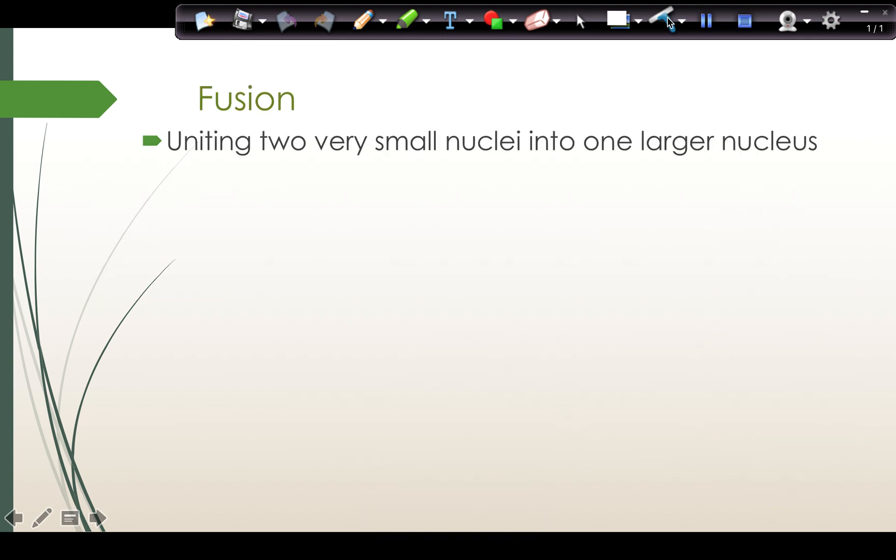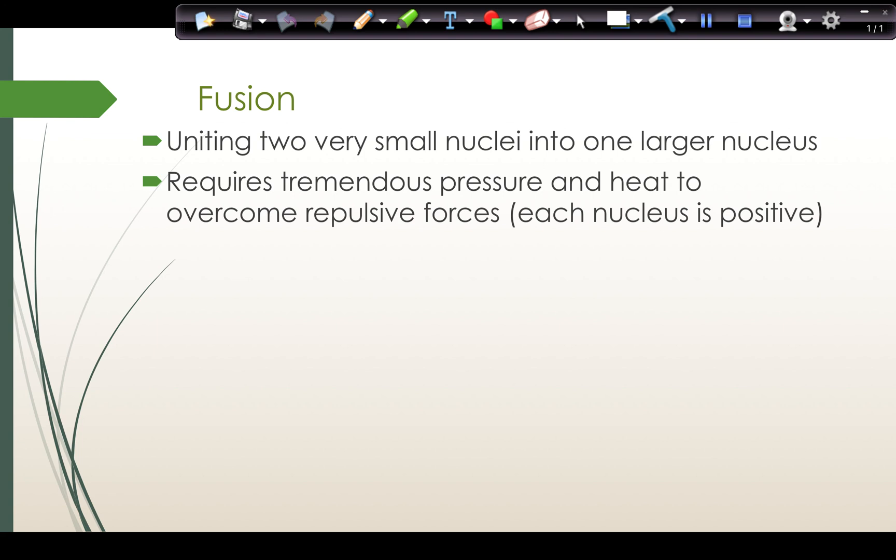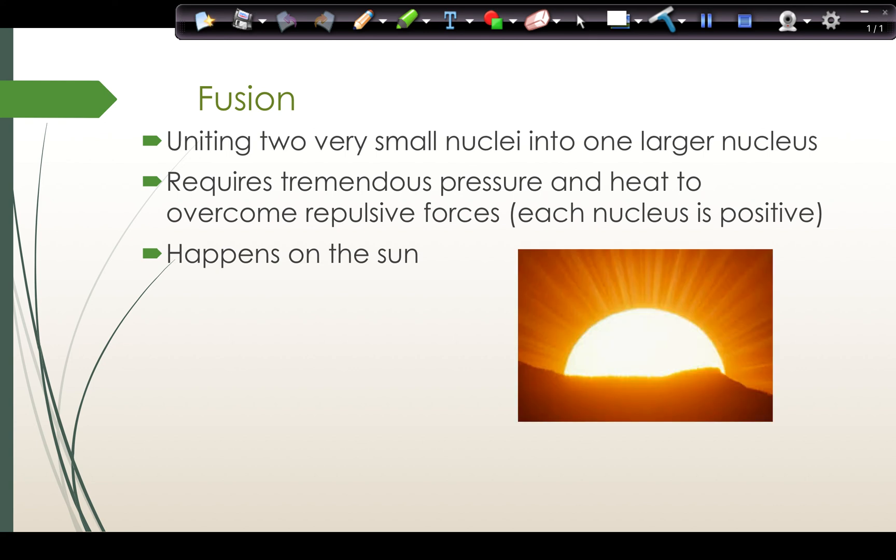Fusion is what happens when we unite two very small nuclei into one larger nucleus. It requires tremendous pressure and heat because we must overcome the repulsive forces. Each nucleus that we're trying to bring together repels each other because each nucleus is positive. This type of reaction happens on the sun. It's where we get our energy from to power the earth. Some example equations would be hydrogen-2 plus hydrogen-2 makes helium. Another example is hydrogen-3, which is called tritium, plus hydrogen-2, which is called deuterium, making this helium nucleus plus a neutron given off.